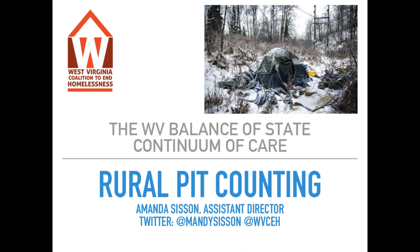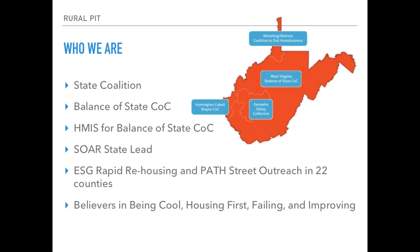We're the state coalition to end homelessness in West Virginia and also the Balance of State Continuum of Care, encompassing 44 of West Virginia's 55 counties. We're also the HMIS lead for the Balance of State, the SOAR state lead, and we do ESG Rapid Rehousing and PATH Street Outreach in 22 of West Virginia's 55 counties. Our motto is that we believe in being cool, we believe in housing first, and we believe in failing and improving.